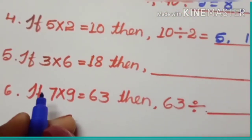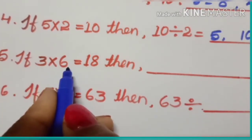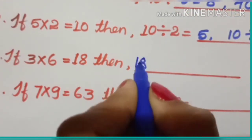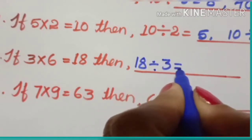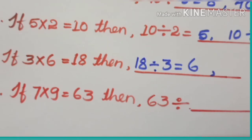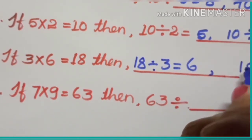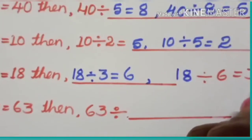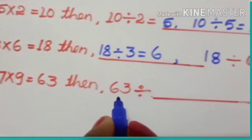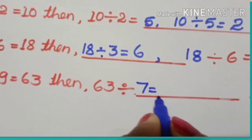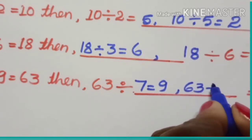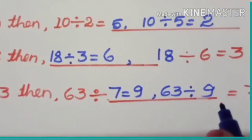Fifth question: if 3 multiplied by 6 is equal to 18, write the division form. 18 divided by 3 is equal to 6. The divisor and quotient are already given, so write 18 as the dividend. 18 divided by 6 is equal to 3. Sixth question: if 7 multiplied by 9 is equal to 63, then 63 divided by 7 is equal to 9, and 63 divided by 9 is equal to 7.